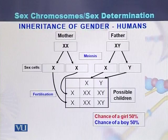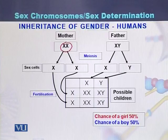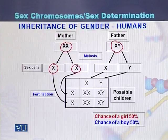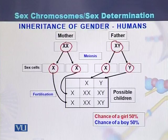Inheritance of gender in humans. In the case of humans, the mother has two X chromosomes, while the father has one X chromosome and one Y chromosome. During the process of meiosis, these separate into gametes, which are called sex cells. In the case of the female, the sex cells are produced as X and X, while in the case of the father, they are converted into sperm.